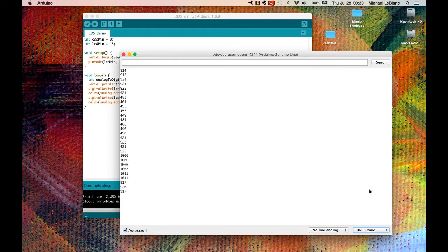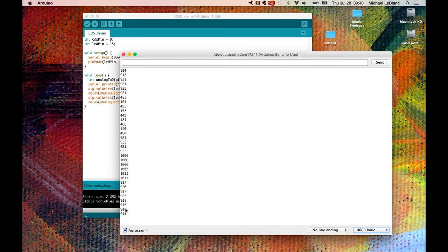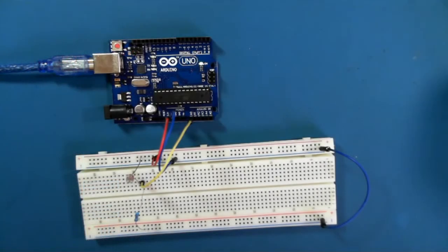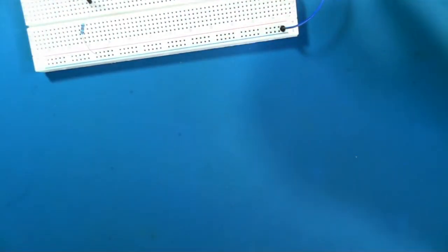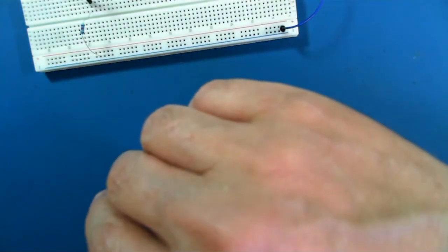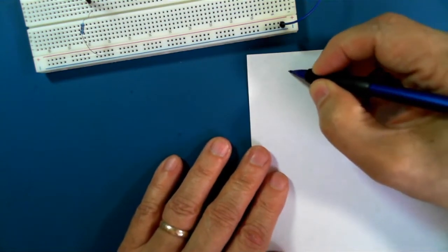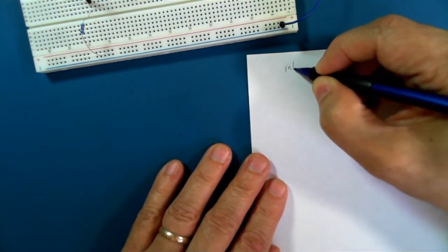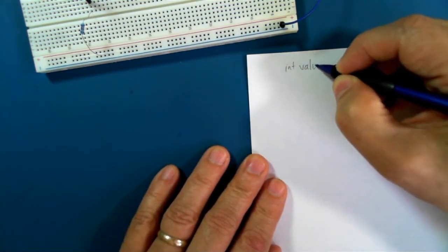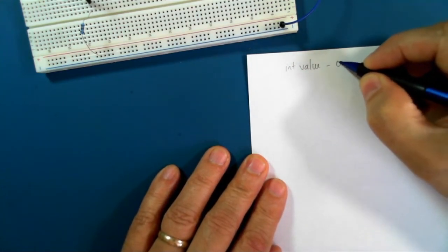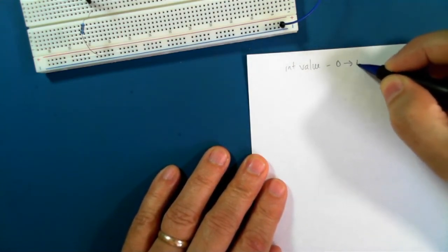so these values you can then translate back if you want to a voltage. Right so how would we do that. So situation is that we have an integer value from 0 to 1023